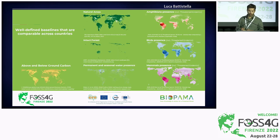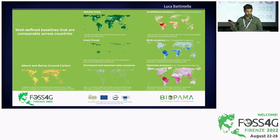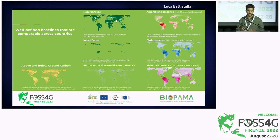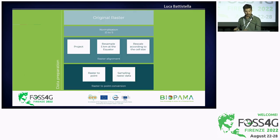The datasets included so far represent a preliminary list — nothing is set in stone, and we can increase the number of datasets, which we'll call variables from now on, quite easily. For now we have 10. We address the biodiversity component through amphibians, birds, and mammals' presence — both overall presence and threatened and endemic species presence. Then natural areas, intact forest, permanent and seasonal water presence, and above and below ground carbon. Data preparation is a long process that we try to automate using Python and QGIS combined.